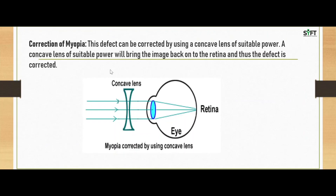Myopia can be corrected by using a concave lens of suitable power. A concave lens of suitable power will bring the image back onto the retina, and thus the defect is corrected. As shown in the image, when we place a concave lens in front of the eye, it helps the image to be formed at the retina.